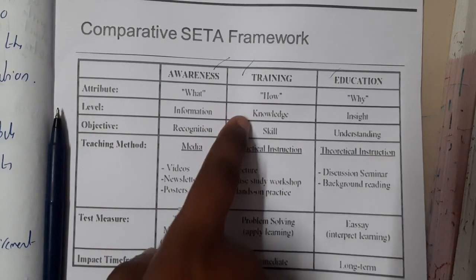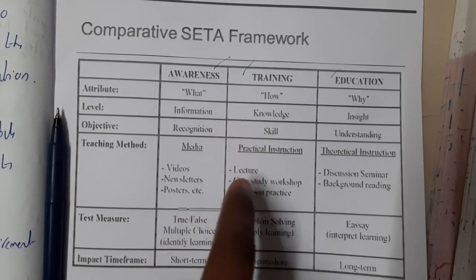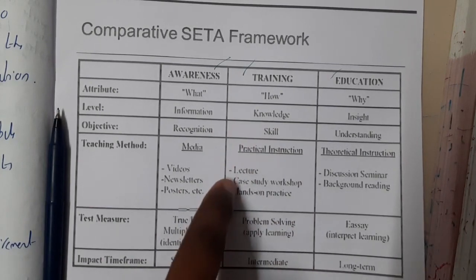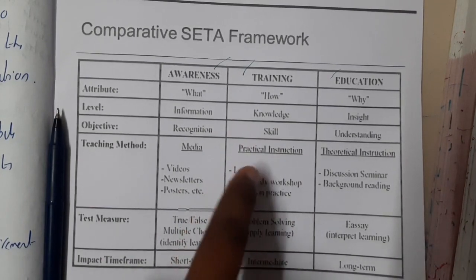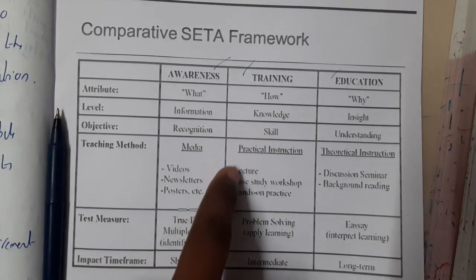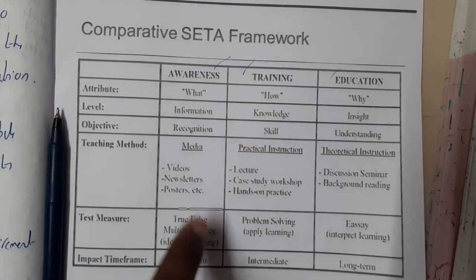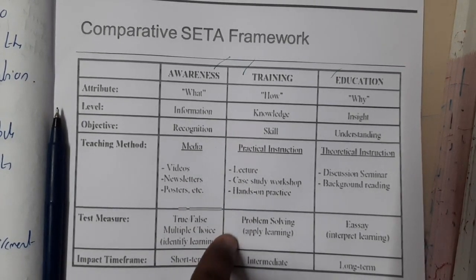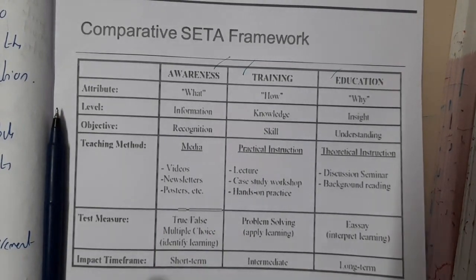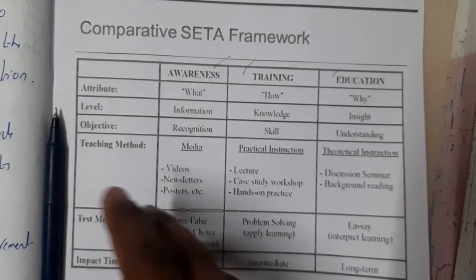Training falls under the objective of skill development. The teaching model includes lectures, case studies, and hands-on practice. At the end you will have problem-solving exercises on an application or learning platform. Training is at the intermediate level.